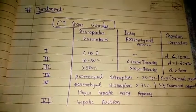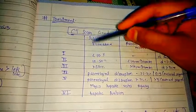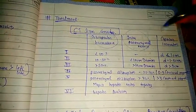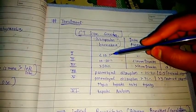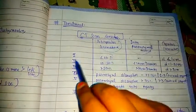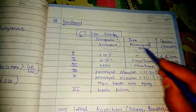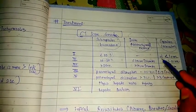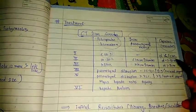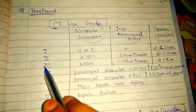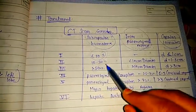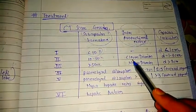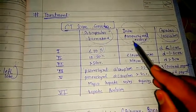CT scan grading of liver injury: Grade 1 — subcapsular hematoma less than 10%, no parenchymal expansion, and capsular laceration depth less than 1 cm. Grade 2 — subcapsular hematoma 10–50%, no parenchymal expansion.